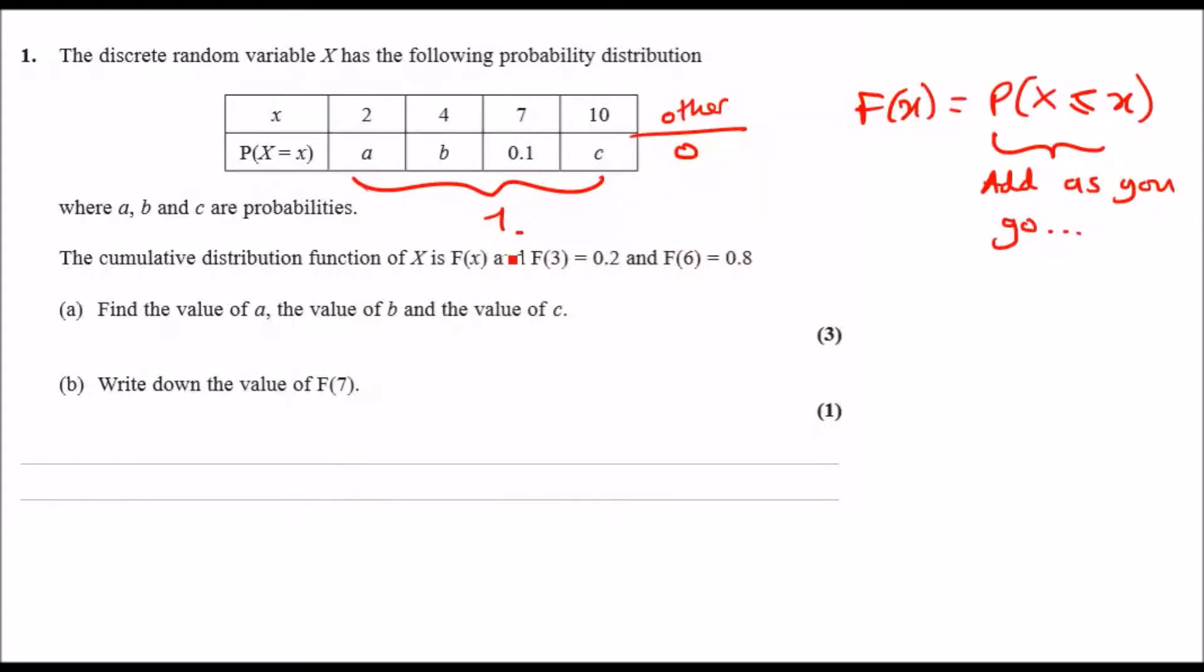F(3) means up until 3, so just a only. So the probability of a is equal to 0.2, so we can call that this value 0.2. And F(6) equals 0.8, so probabilities up until 6, so that includes 2 and 4 only, because the value at 6 would be zero. So a plus b is 0.8, so that means b must be 0.6, because 0.2 must make 0.8.